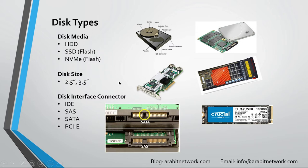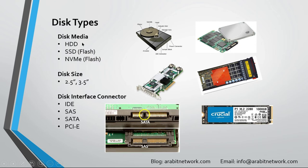Which type of media should you choose? Which interface should you choose? It depends on the workload you're going to run on the disk. If you're running an application that is sensitive to speed and latency, you should choose either an SSD or an NVMe disk, following the instructions of the application vendor. For backup or archive data, you would use HDD disks, which come with larger capacity and are cheaper.